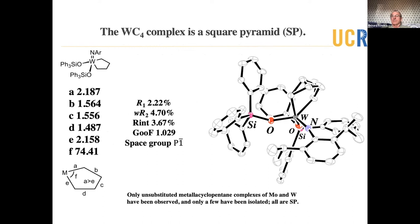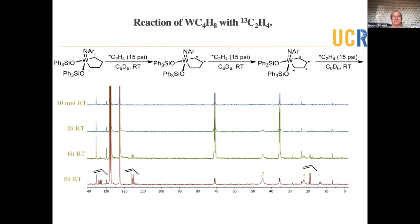Here's a crystal structure of the square pyramidal metallicyclopentane that we've made, and there's nothing surprising about it. It's a classical square pyramid. The tau value is as it should be for a square pyramid. We know of several others of this general type. So I asked the student, Max Bougellel, Maxime Bougellel, to simply look at simple reactions such as exchanging C13 labeled ethylene into the metallicyclopentane ring.